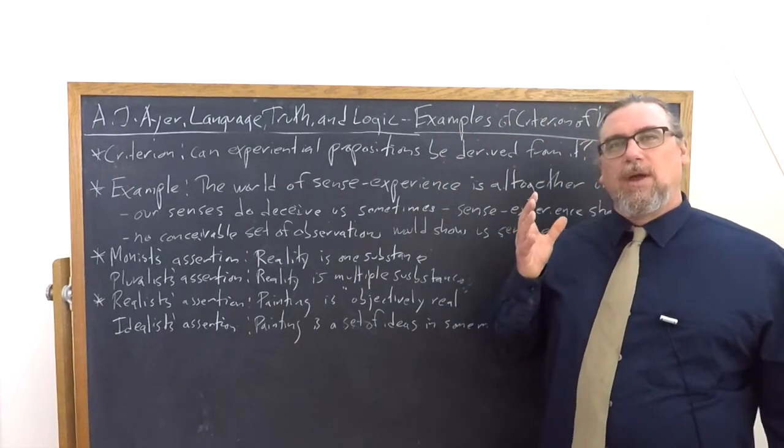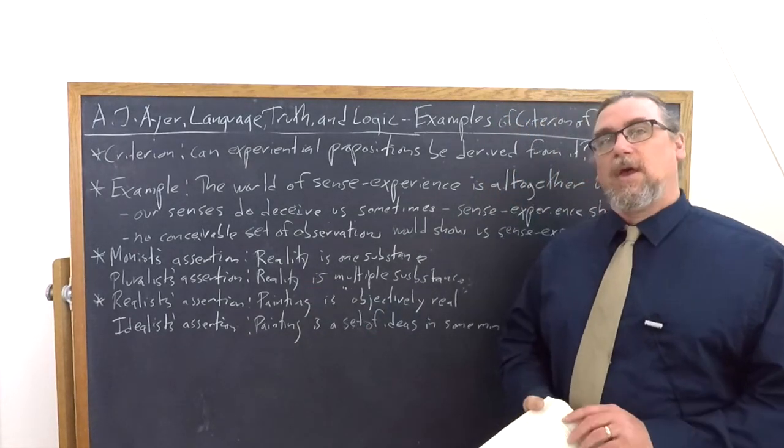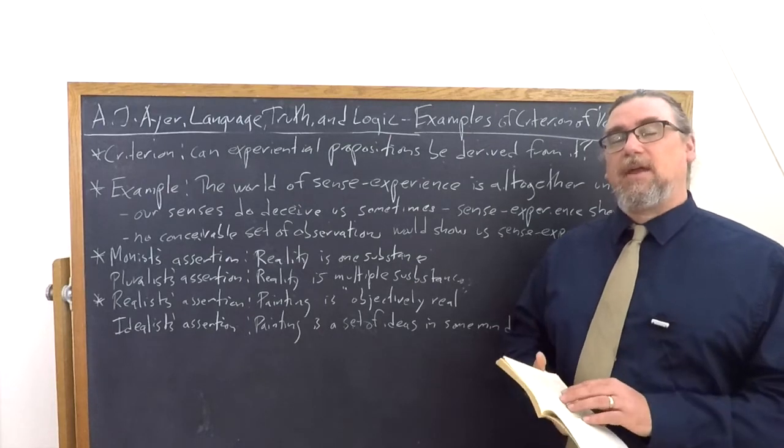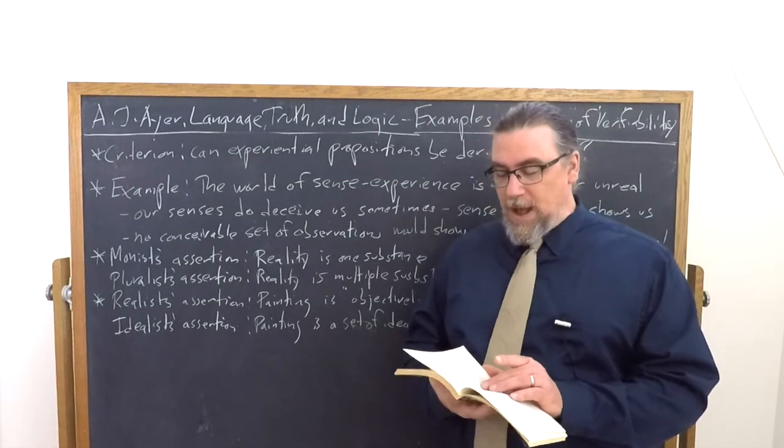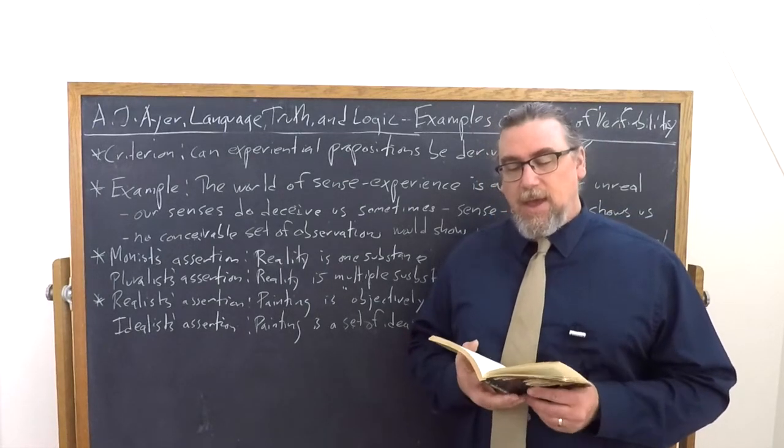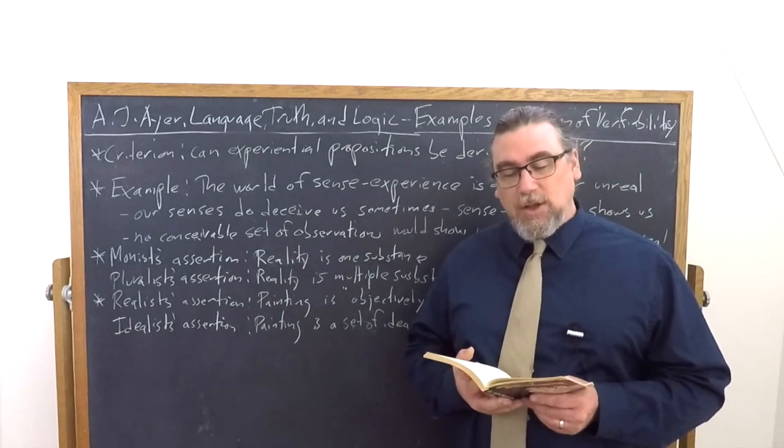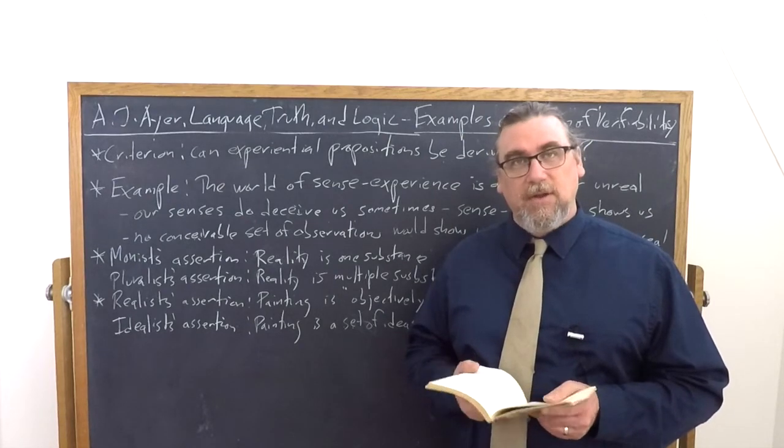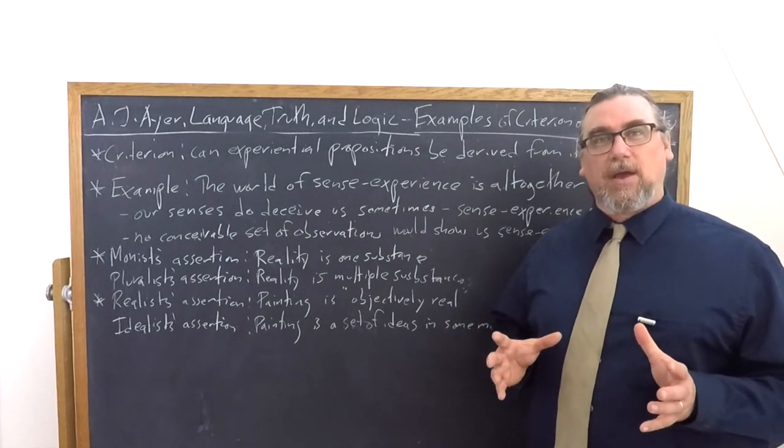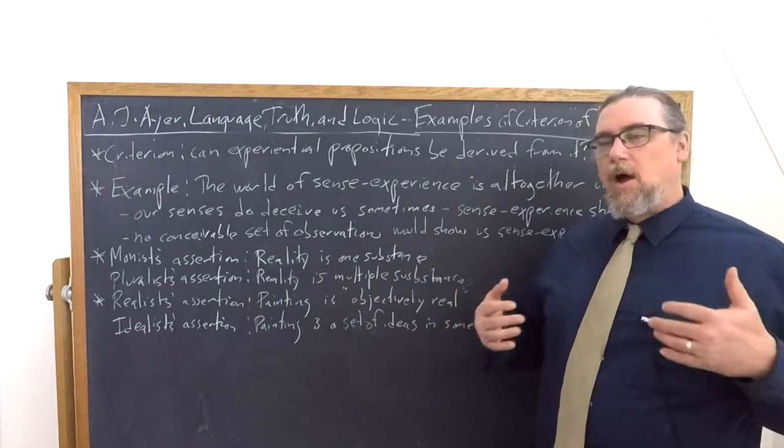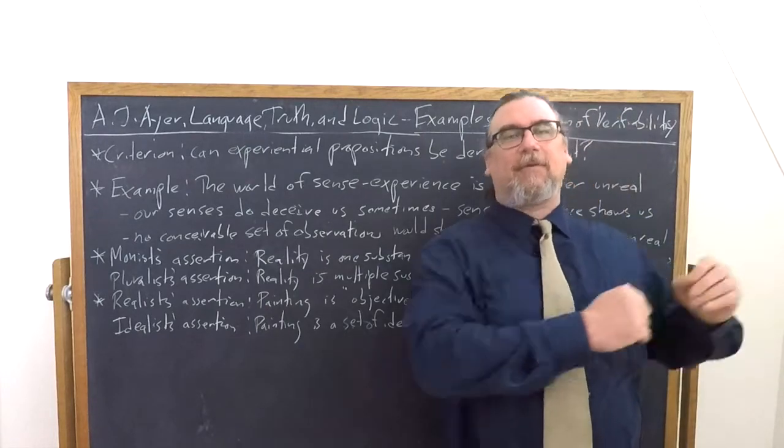There's no way to verify or, for that matter, falsify the assertion of the monist, which means that the monist is literally saying, according to Ayer, nonsense. He says that if we're told there's no possible observation that could give any probability either to the assertion that reality was one substance or to the assertion that it was many, we must conclude that neither assertion is significant. And again, significant, he means in a literal sense where we're talking about matters of fact. If we're talking about our emotions or we're being metaphorical or poetic, we can say all this stuff that we want, but that's a different use of language.